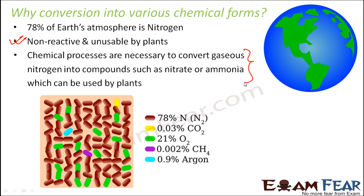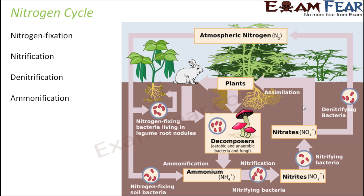The total amount of nitrogen in the atmosphere remains balanced at all times — even though some nitrogen is converted into nitrates, some nitrogen comes back to the atmosphere. The nitrogen cycle is a multi-step process. The important steps are nitrogen fixation, nitrification, denitrification, and ammonification.